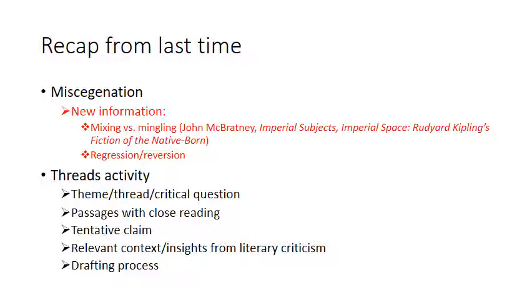Mingling was considered an acceptable social perception, while mixing — sexual contact with colonized people — was considered unacceptable. You can see this line in the text: Murthwaite mingles with Indians on a social level and is considered an eminent, respected traveler, whereas Ezra Jennings, a product of a mixed-race sexual union, is considered degraded and of unsavory character. This mixing versus mingling distinction helps us make sense of the different attitudes around race in the novel.